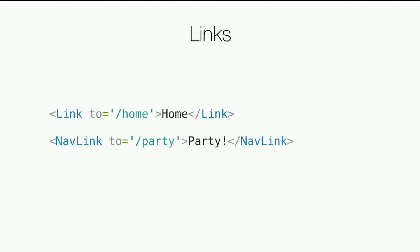How does NavLink know if it's active? If you're at localhost:3000 and you have slash party after that, that slash party is going to match what the NavLink links to, so it knows it's the active link because the URL currently matches what it links to — and it automatically puts that active class on there for you.